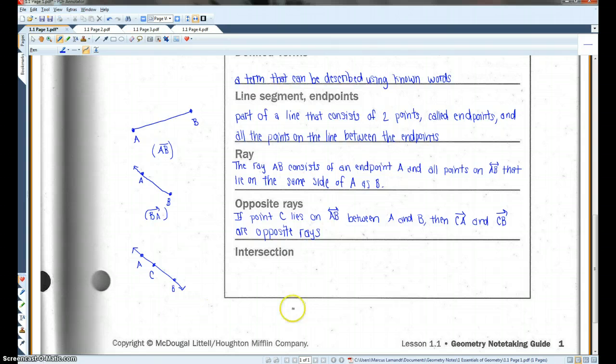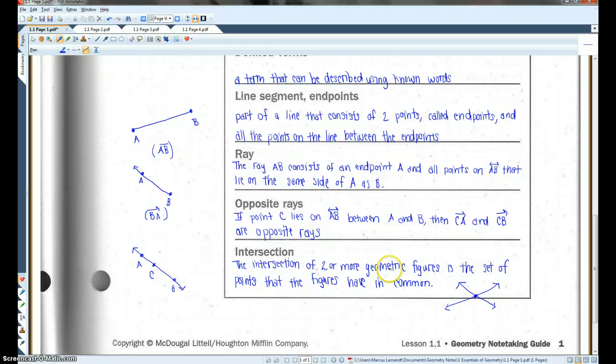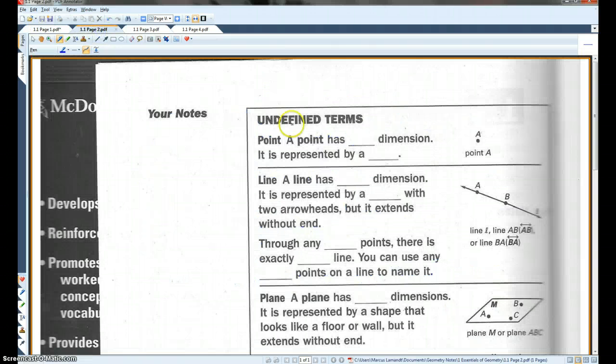The intersection, okay, intersection. Basically, if you have two figures that connect or touch or cross each other, that's called an intersection. The intersection of two or more geometric figures is the set of all points that the figures have in common. So, this would be the intersection of two lines. Okay. You could also intersect planes. You could intersect a line and a plane. You could intersect almost anything. Okay. All right. Let's go on to page two. Okay.